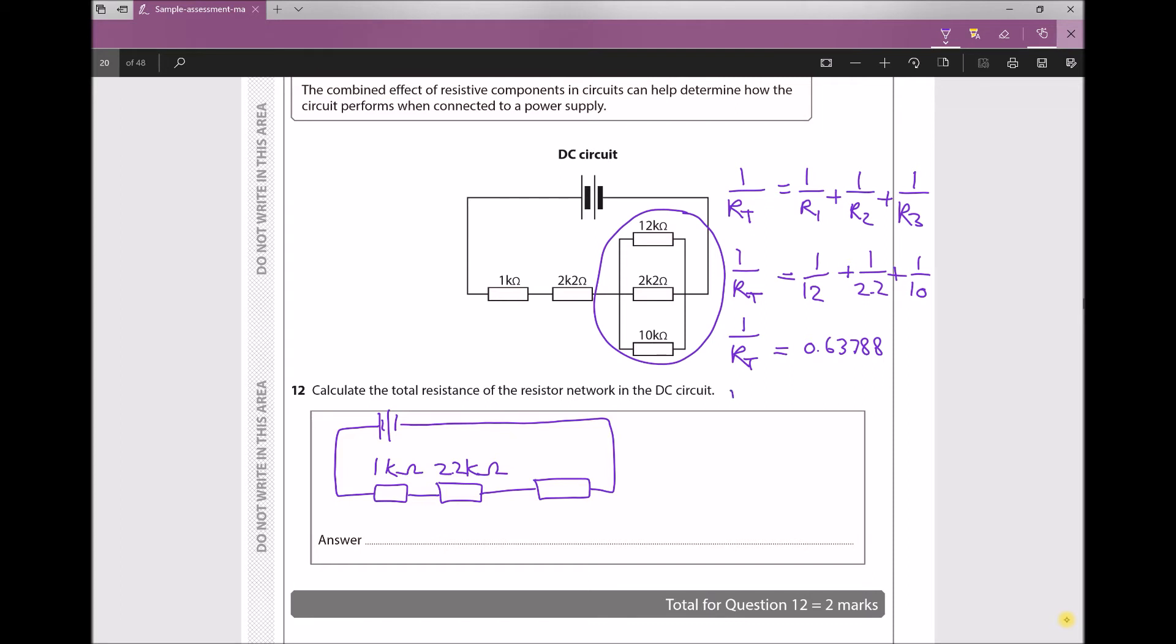So RT is 1 over 0.63788, giving me a value of RT equal to 1.5677. And my units there are kiloohms.